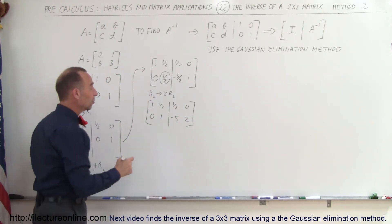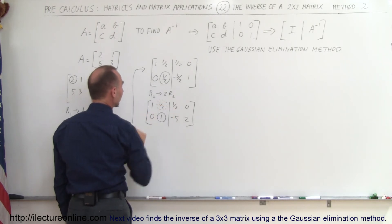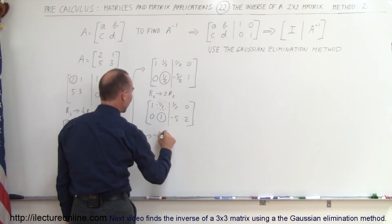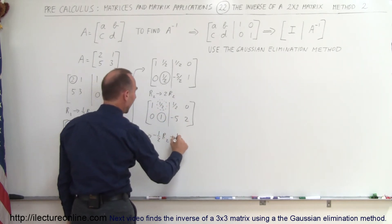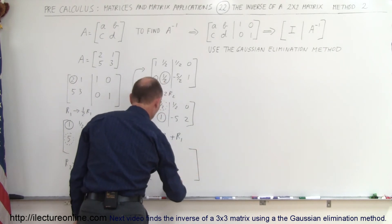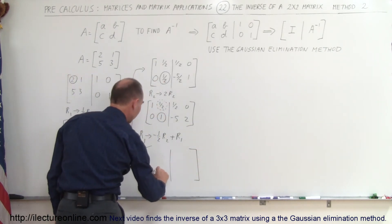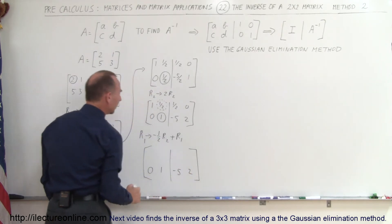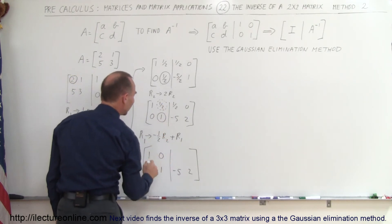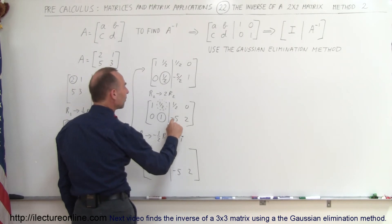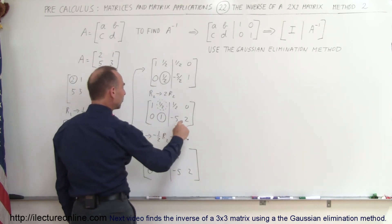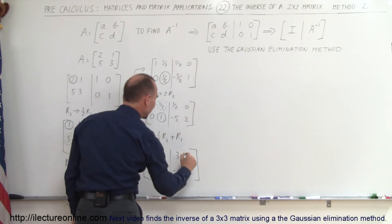The last step is to use the 1 in the second row to turn the one-half in the first row into a 0. I take the first row and replace it by negative one-half times the second row added to the first row. Negative one-half times 1 is negative one-half; add it to one-half gives 0. Negative one-half times negative 5 is positive 5 halves; add it to one-half gives 6 halves, or 3. Negative one-half times 2 is negative 1; add it to 0 gives negative 1.